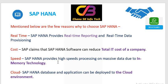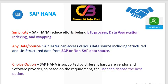SAP HANA is cloud-oriented — the HANA database and application can be deployed in a cloud environment. S4 HANA is the application software; HANA is the database — both are not the same. Because of simplicity, SAP HANA reduces efforts behind the ETL process, data aggregations, indexes, and mappings. These efforts have been reduced after implementing SAP HANA.